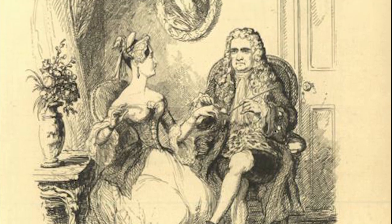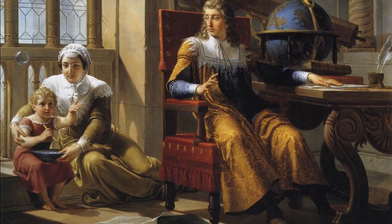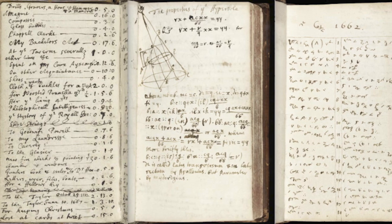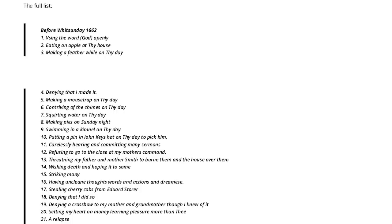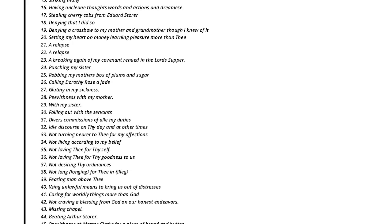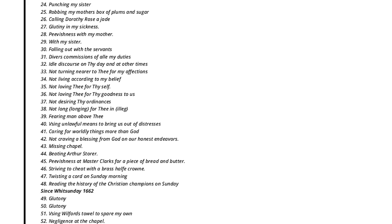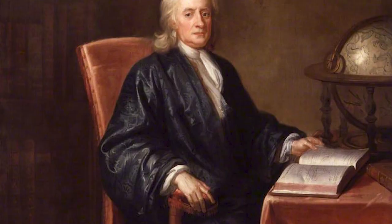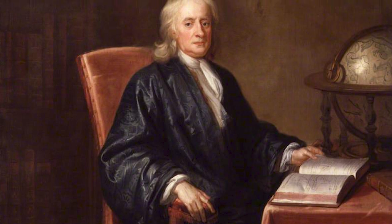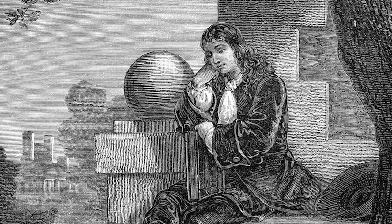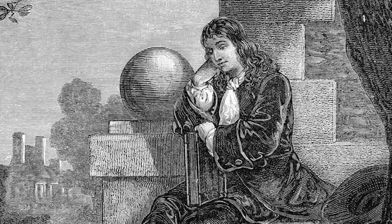He also committed transgressions and kept a list. When he was in his twenties, he kept a diary of the sins he had committed — he listed 57 of them. Some included making pies on Sunday, stealing plums and sugar from his mother, setting his heart on money, gluttony, beating Arthur Storer, punching his sister, and threatening to burn the house down around his mother and stepfather. As you can see, he had some issues with himself, but he was aware enough to know it was bad. Because of that, Newton felt like he was a great sinner.